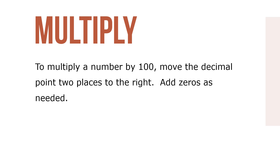As a navigational aid to the direction of the decimal point, consider the words decimal and percent as written alphabetically, with decimal preceding percent. When converting from a decimal to a percent, the decimal moves right. When converting from percent to decimal, the decimal moves to the left.